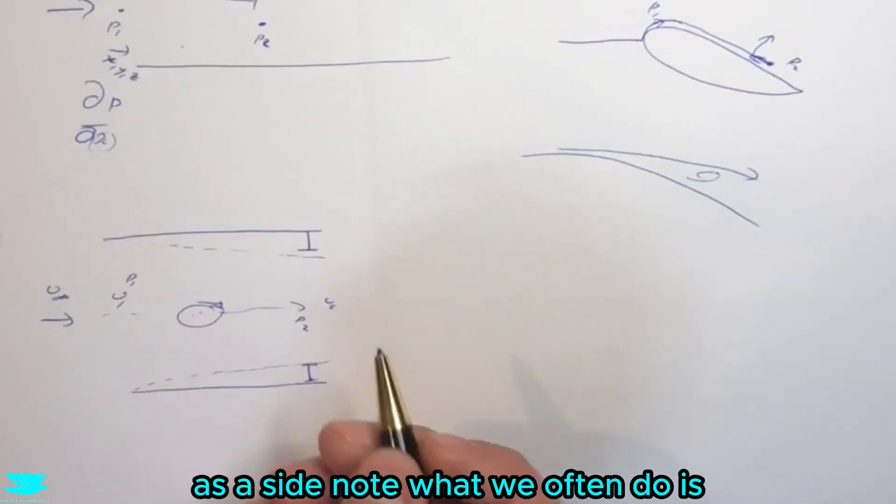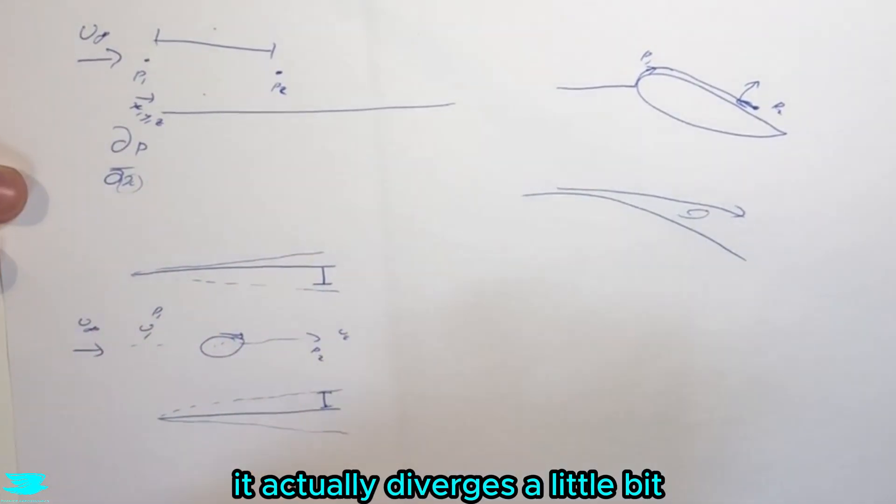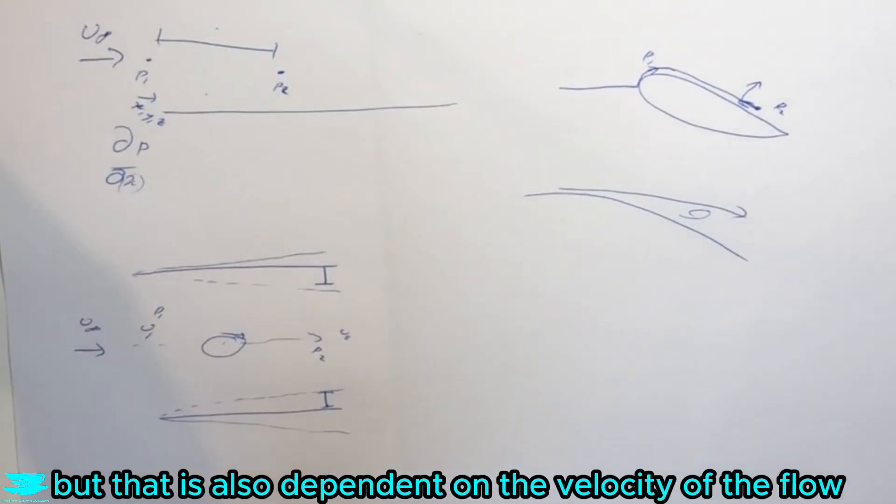As a side note, what we often do is we change the wind tunnel's cross-sectional area so it actually diverges a little bit to take into account these boundary layer growths, but that is also dependent on the velocity of the flow.